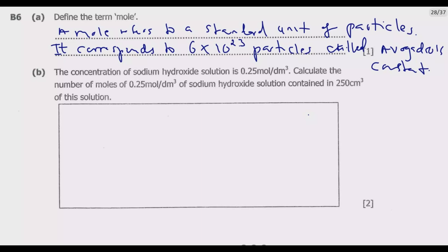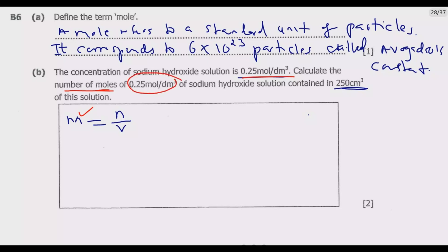Question B: The concentration of sodium hydroxide solution is 0.25 moles per decimetre cubed. Calculate the number of moles of sodium hydroxide contained in 250 cm³ of this solution. Molarity is given by the number of moles divided by volume. We've been given the molarity and the volume, so we can find the number of moles by cross multiplication.